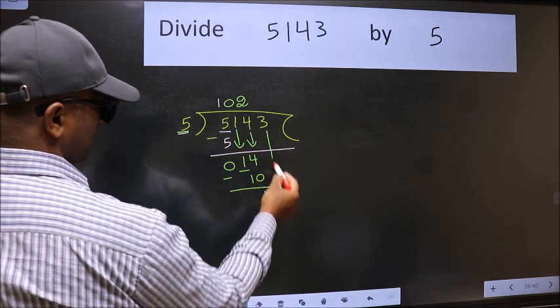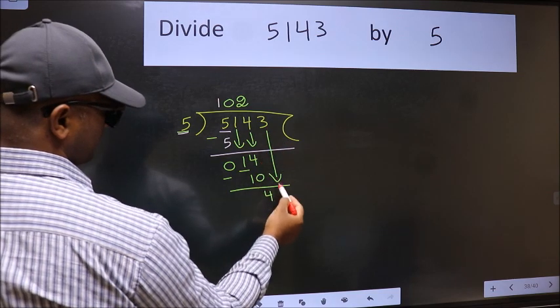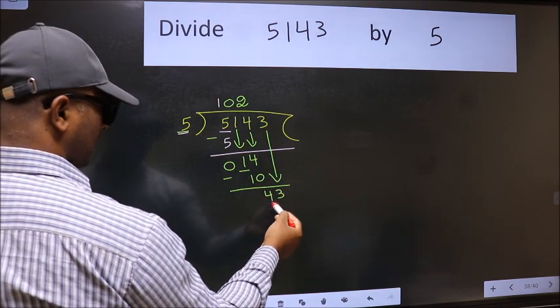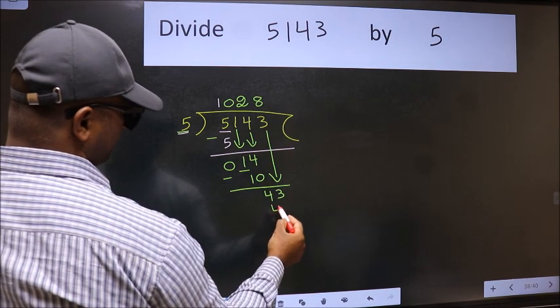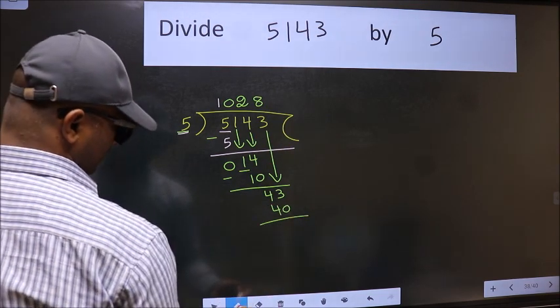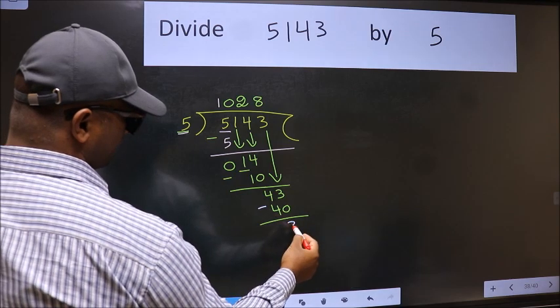After this, bring down the beside number. So 3 down. A number close to 43 in the 5 table is 5 eights 40. Now we subtract. We get 3.